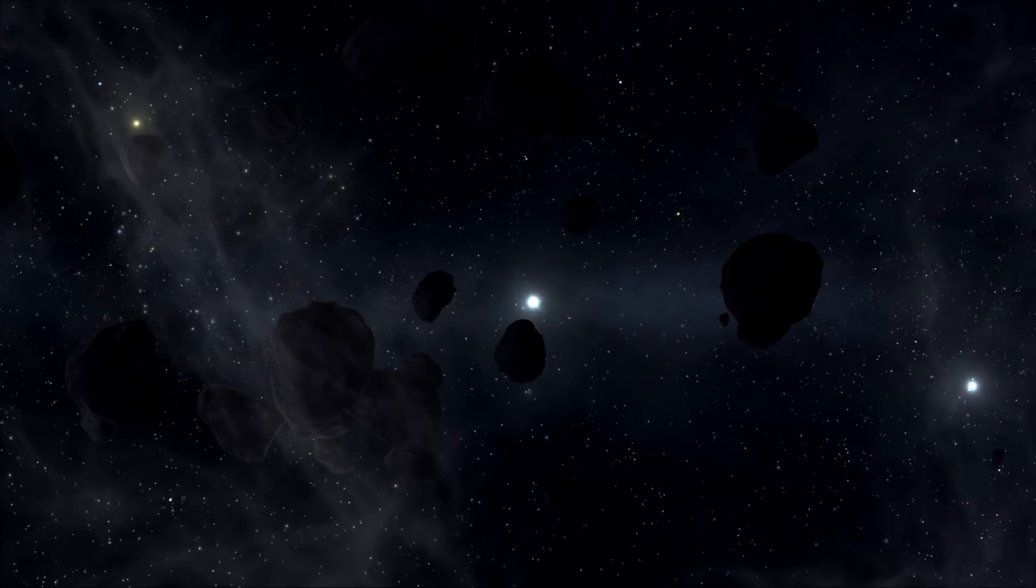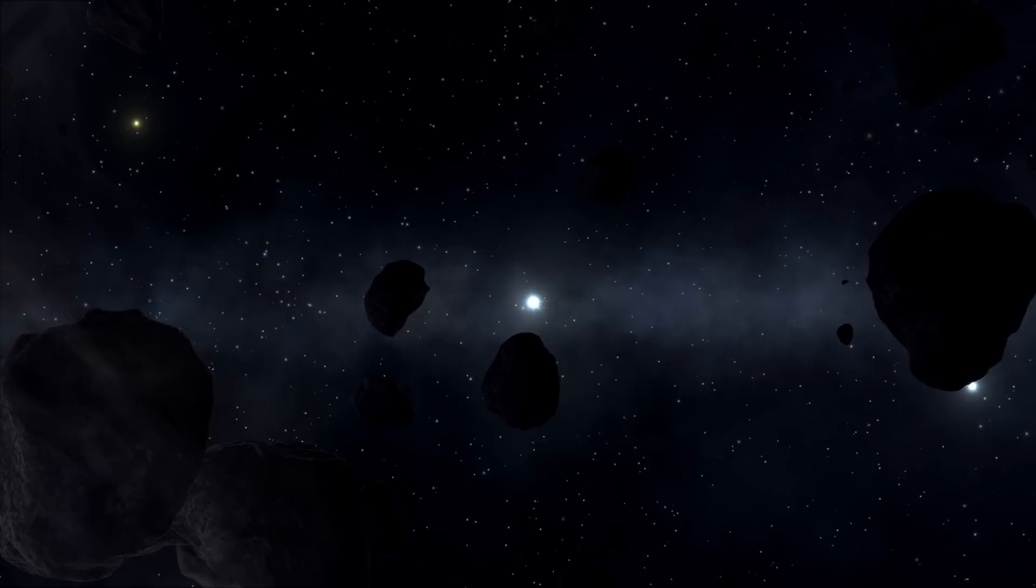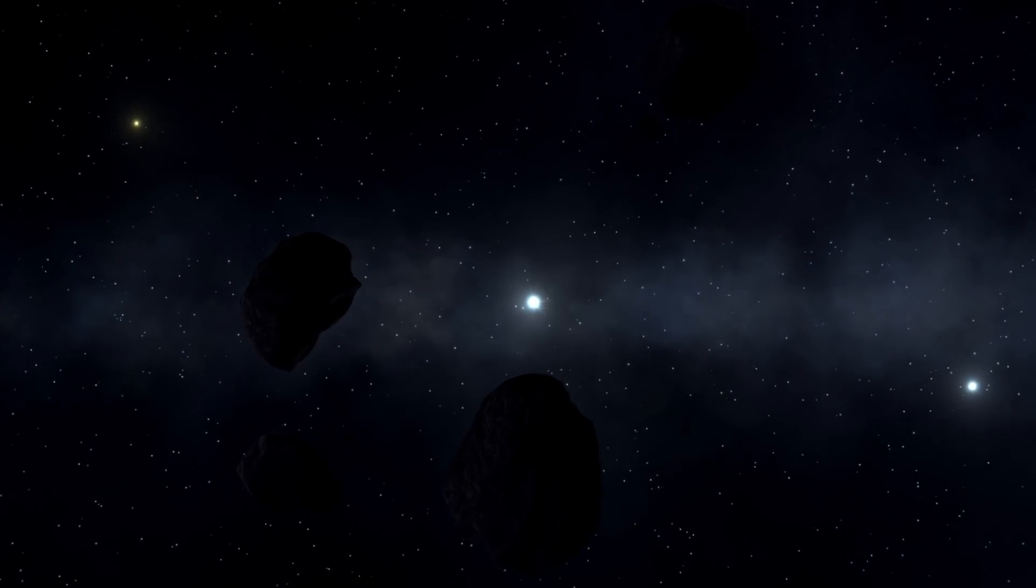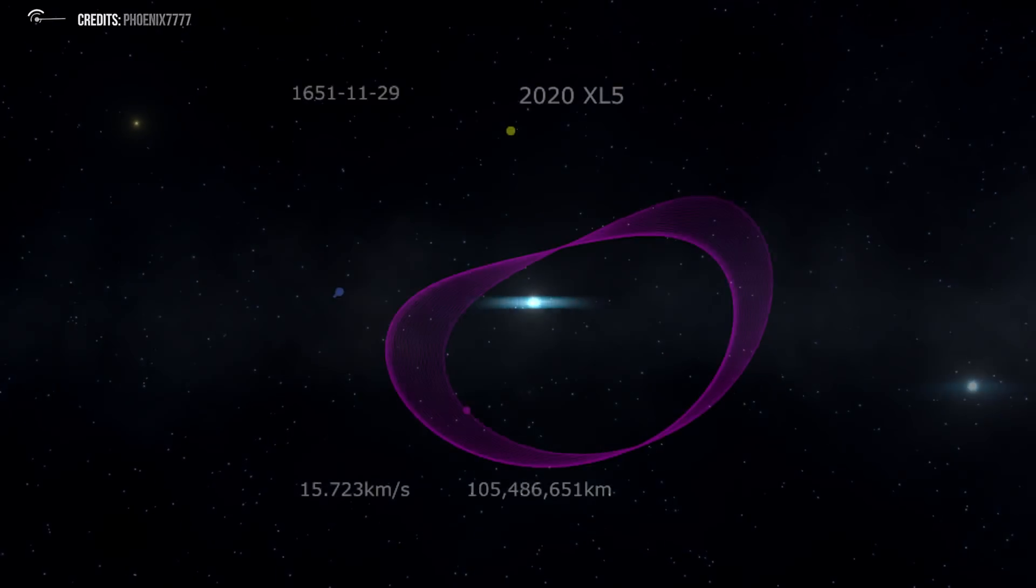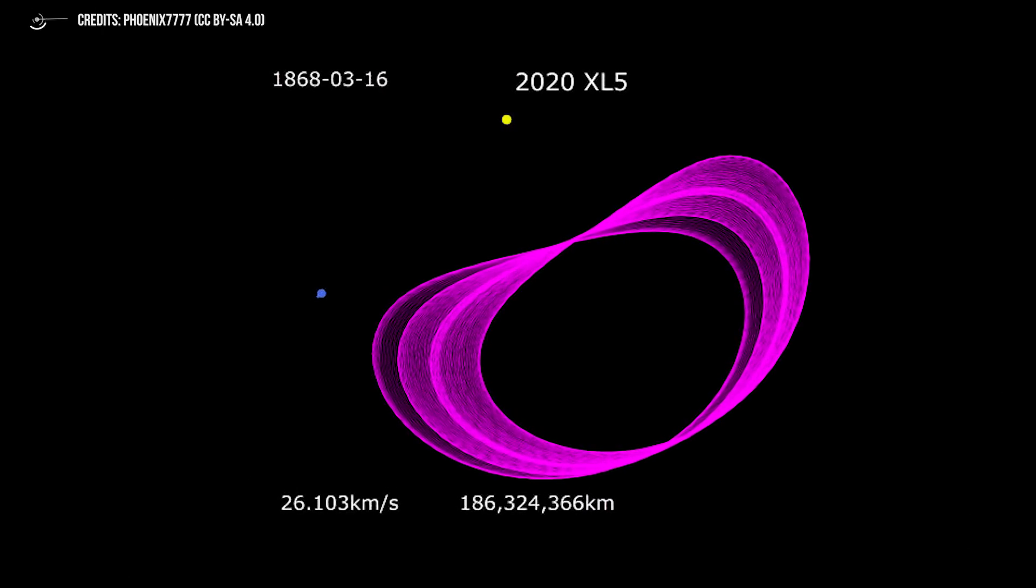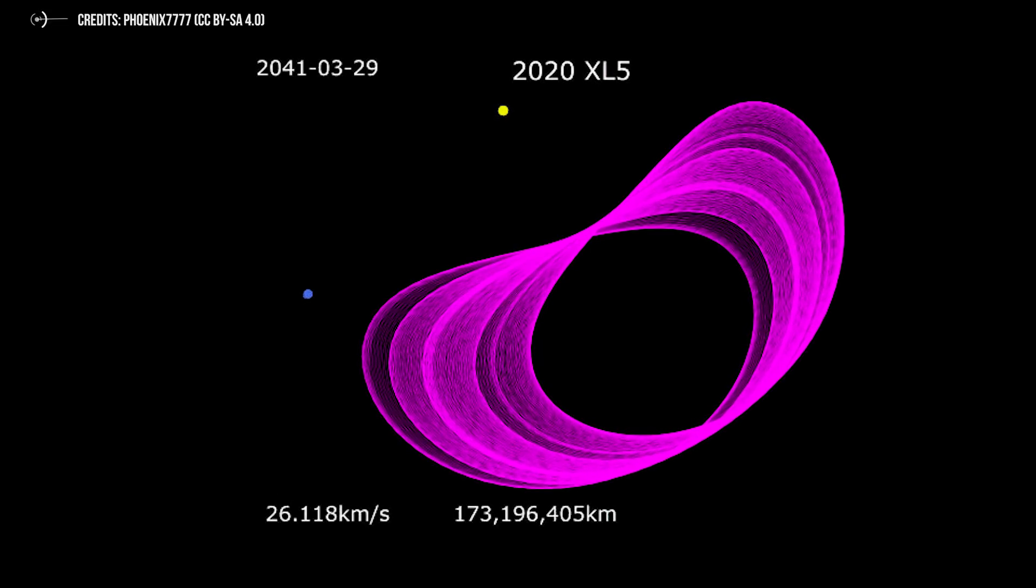Although the existence of terrestrial Trojans has been theorized for a long time, the first direct observation of one was confirmed only a little over a decade ago. Since then, no other Earth Trojan asteroids have been discovered, at least until 2020, when XL5 was spotted for the first time. Although it is only now that we can be certain of its nature as a terrestrial Trojan.